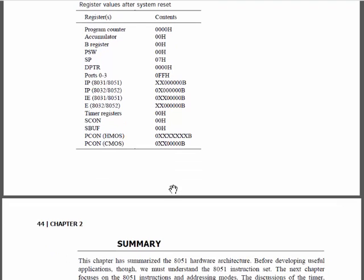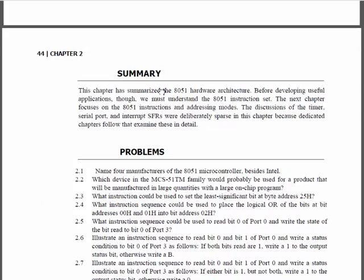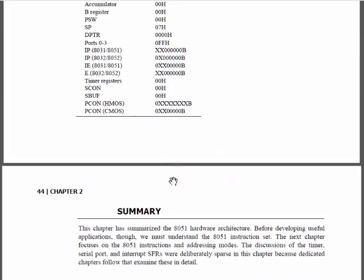This defines what everything is set to on reset: the accumulator is zeroed out, the B register is zeroed out, the status registers are zeroed out, the stack pointer is set to 7 — that's the start of our stack. The data pointer is set to zero, all ports are set high, and the instruction pointer and the extra registers are all zeroed out.